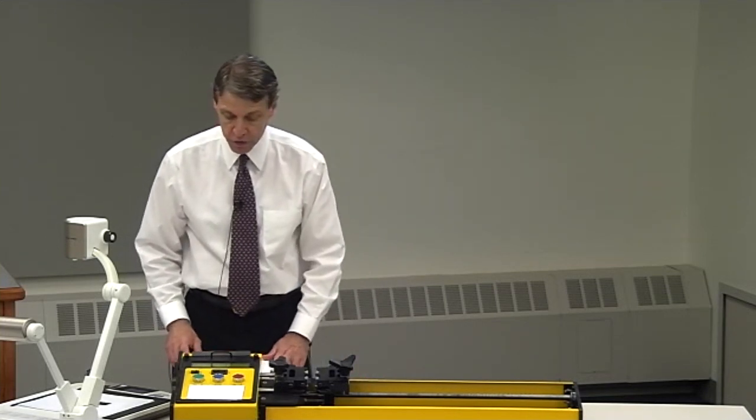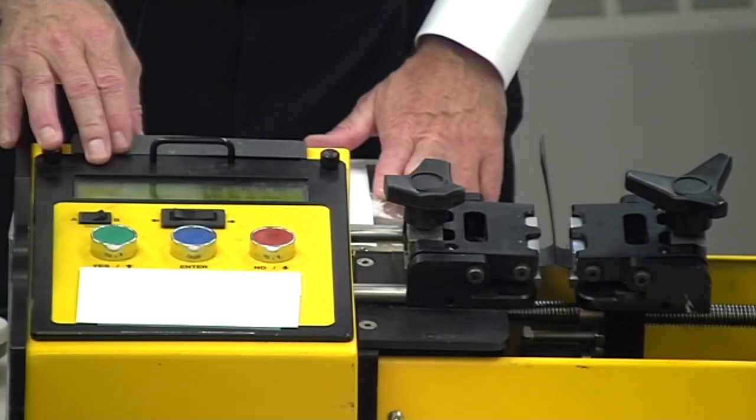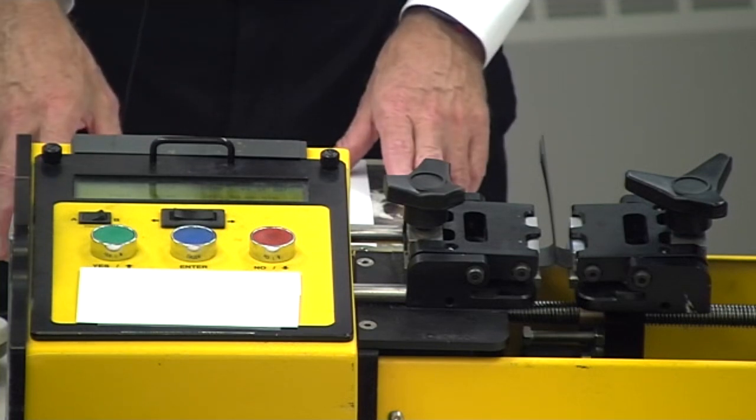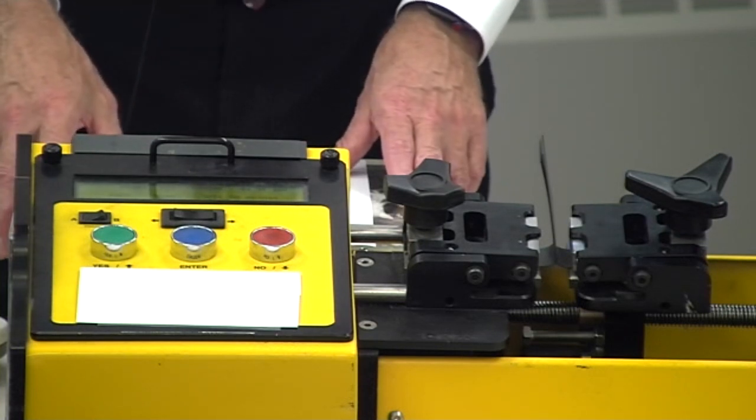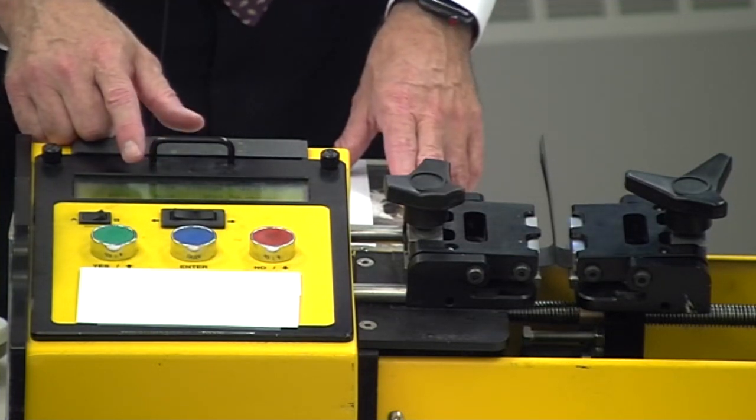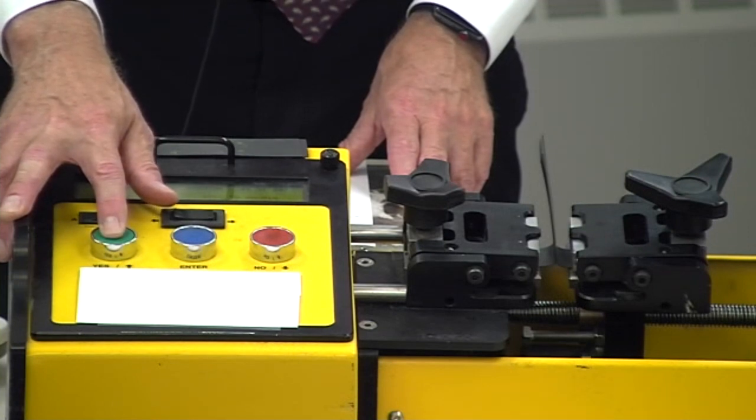We're now ready to start the test with the tensiometer. Here, the tensiometer will read the force that's resisting pulling it apart, and it will also record the displacement that the movable grip has gone at that particular time. So, the test is ready. I'll start the test.